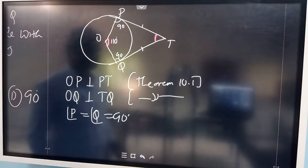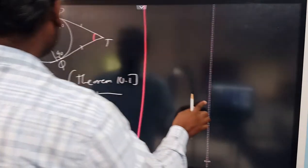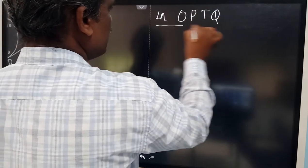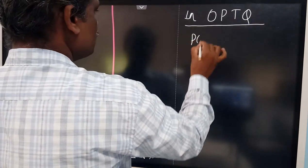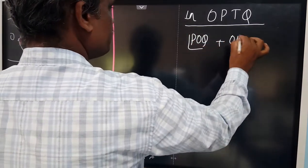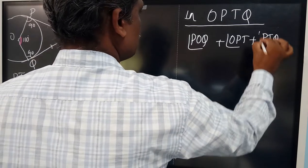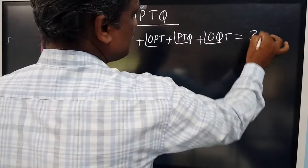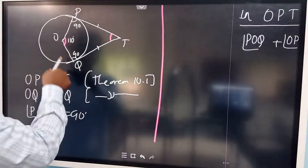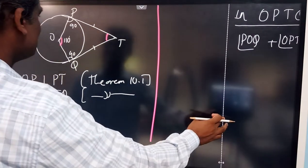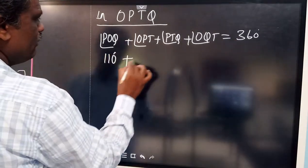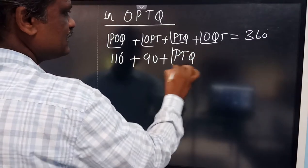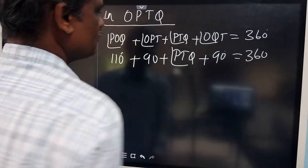Since OPTQ is a quadrilateral, the sum of all its angles equals 360 degrees. So angle POQ + angle OPT + angle PTQ + angle OQT = 360°. Substituting: 110° + 90° + angle PTQ + 90° = 360°, giving 290° + angle PTQ = 360°.